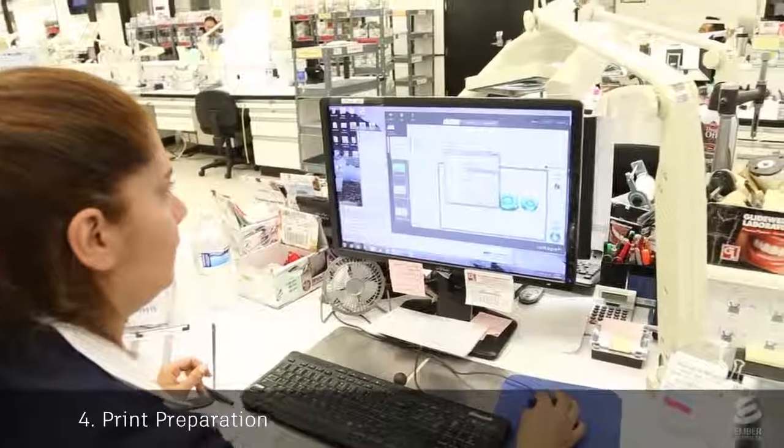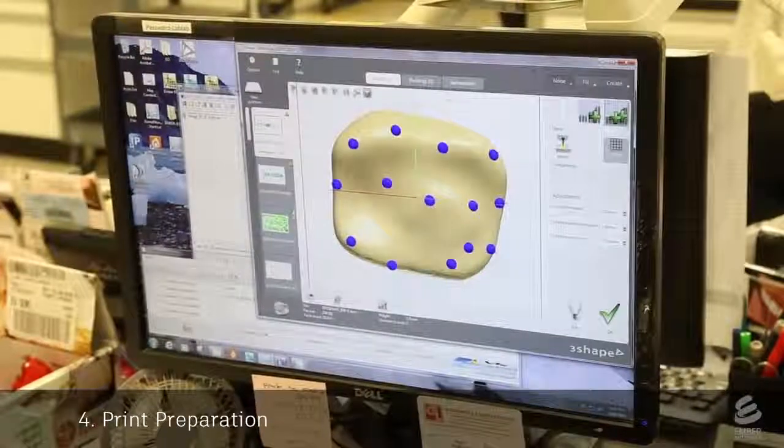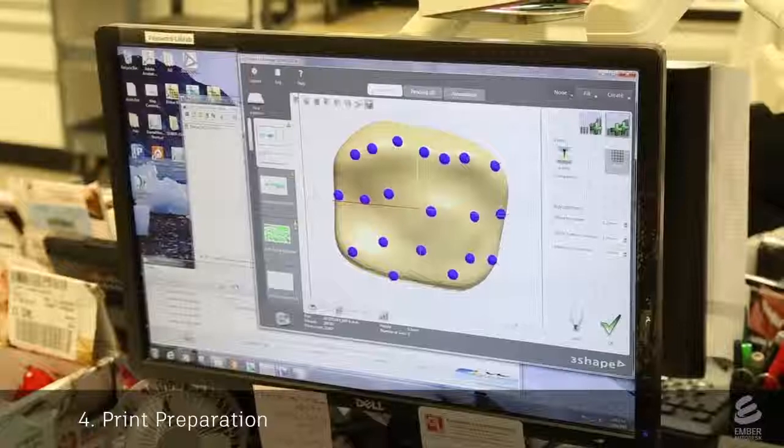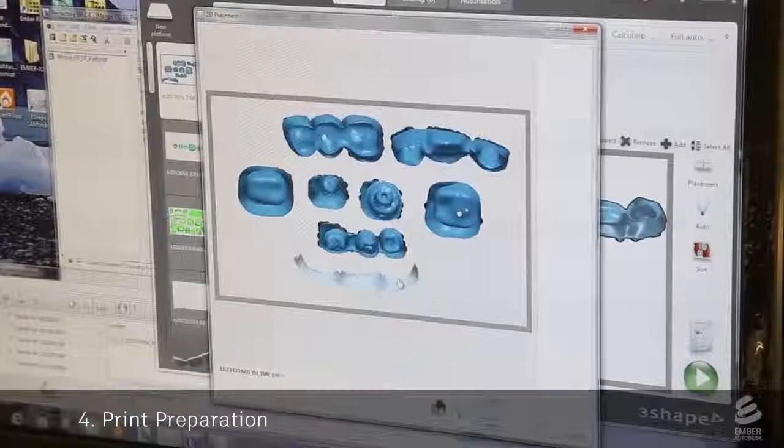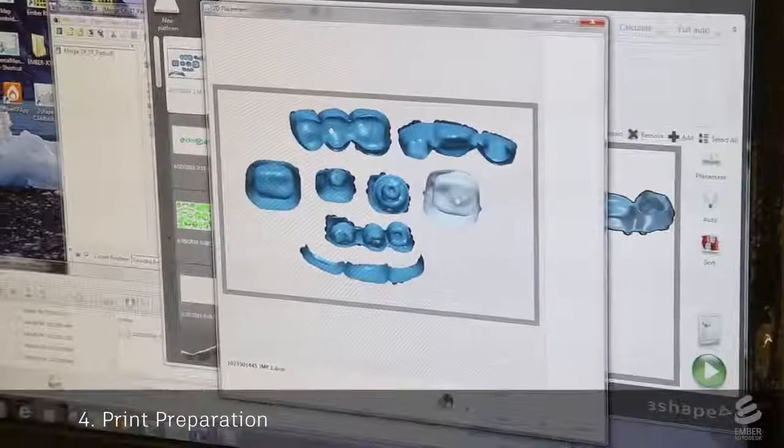Next, the models for the crowns and copings are prepared for 3D printing on Ember. A tech uses special dental software to add supports onto the model. Then the models are tightly arranged in a plane. This nesting allows many crowns to be printed at once, improving the efficiency of the process.